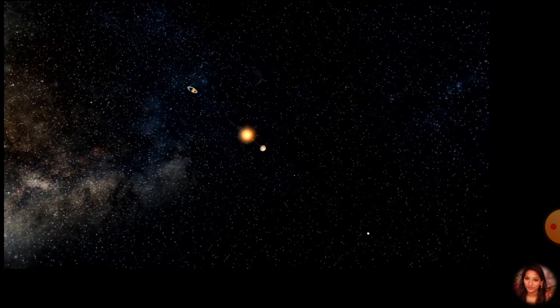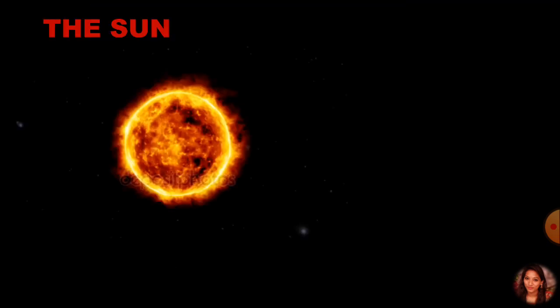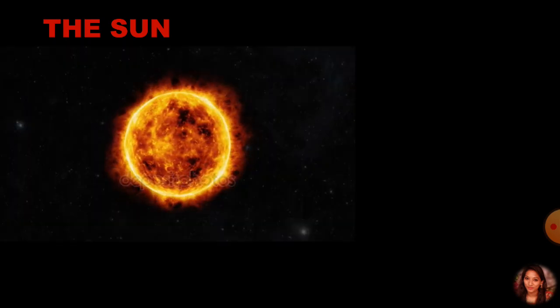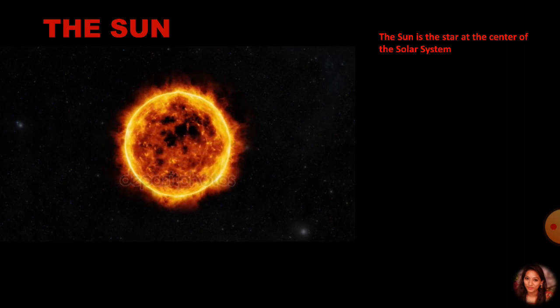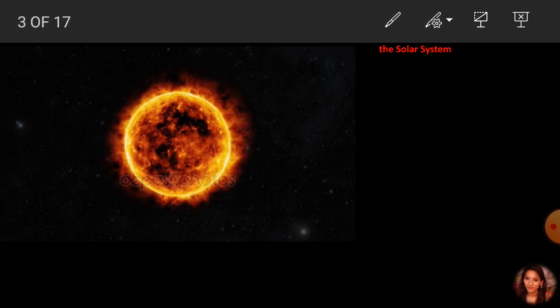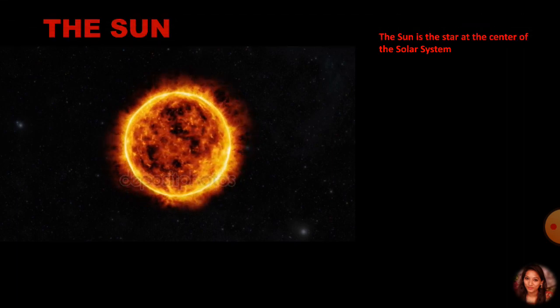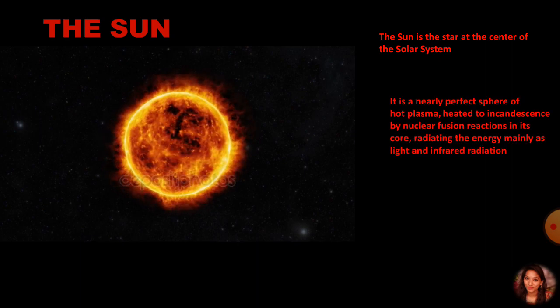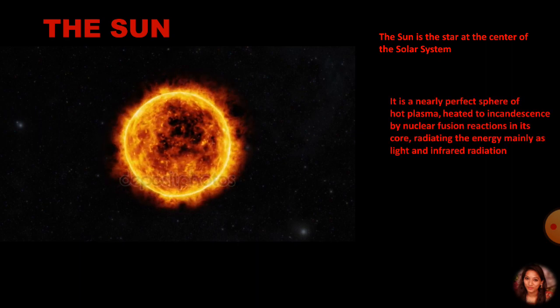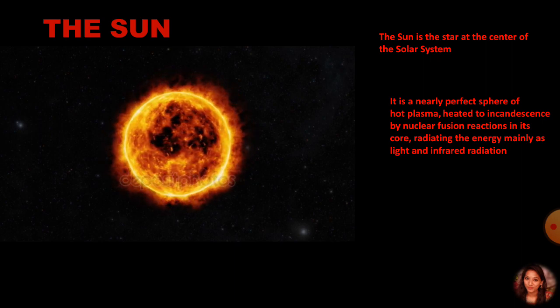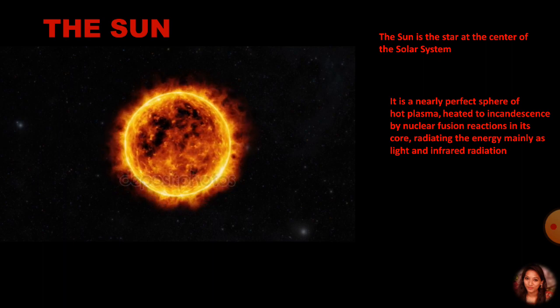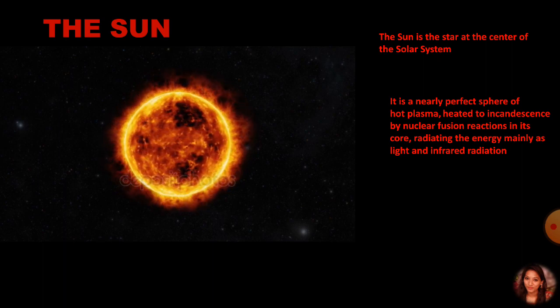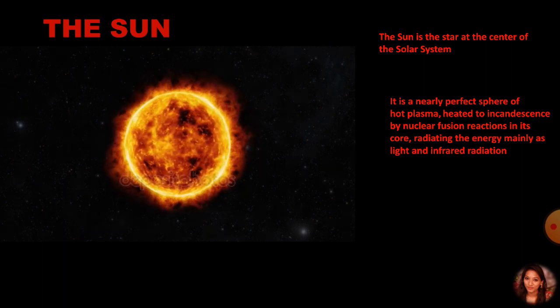First, we'll start with our Sun. The Sun is the star at the center of the solar system. It is a nearly perfect sphere of hot plasma, heated to incandescence by nuclear fusion reactions in its core, radiating the energy mainly as light and infrared radiation.